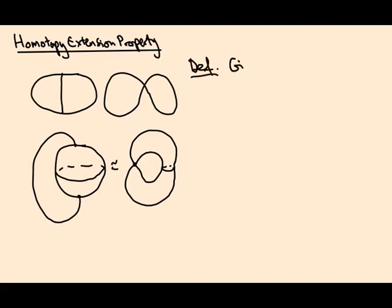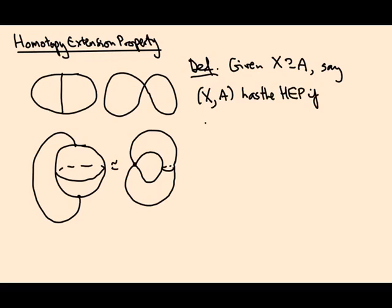Suppose I'm given a space X and a subspace A. We say that the pair (X,A) satisfies or has the homotopy extension property, which I'm just going to write as HEP, if every continuous map f from X to some other space Y,